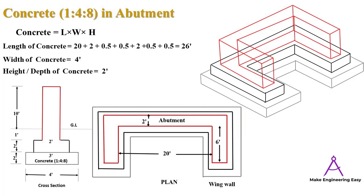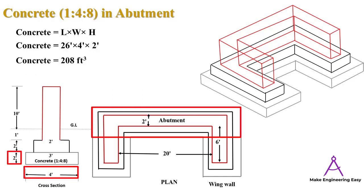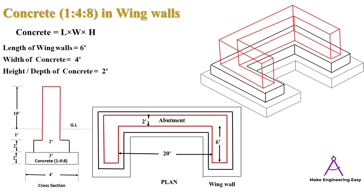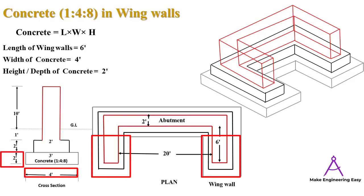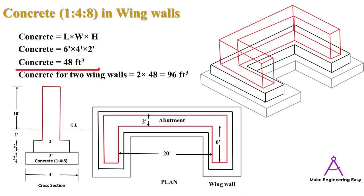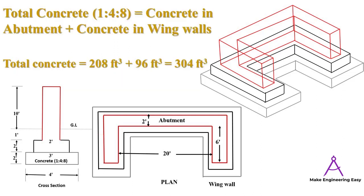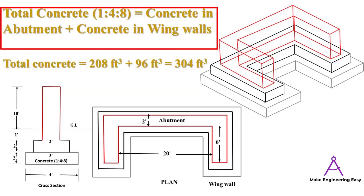The length and width of the concrete will be the same as the excavation dimensions for the abutment. The thickness of the concrete, as clear from the cross section, is two feet. Multiplying length × width × height gives 208 cubic feet of concrete under the abutment. For concrete under two wing walls, length × width × thickness gives 48 cubic feet for one wing wall. Multiplying by two gives 96 cubic feet for both wing walls.